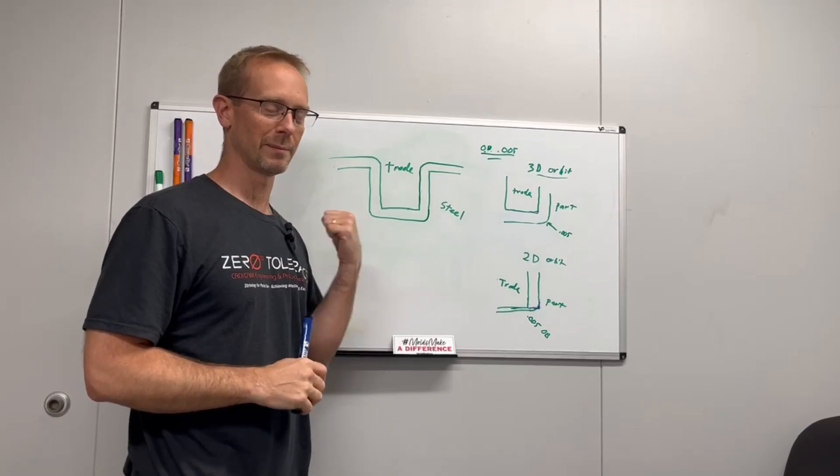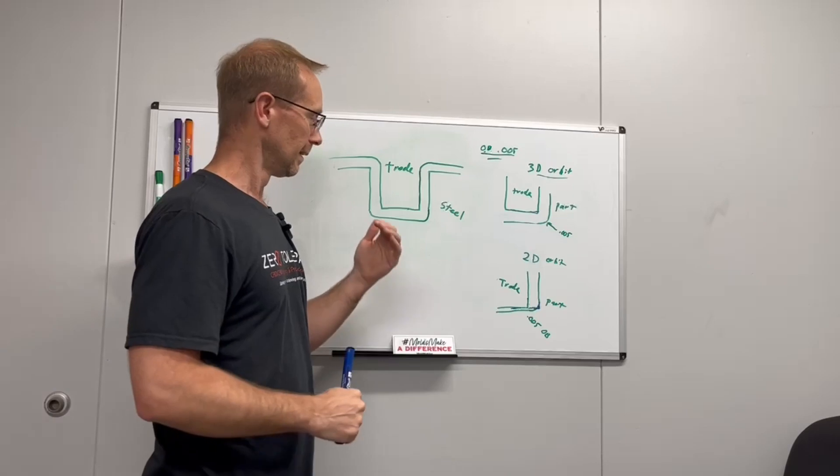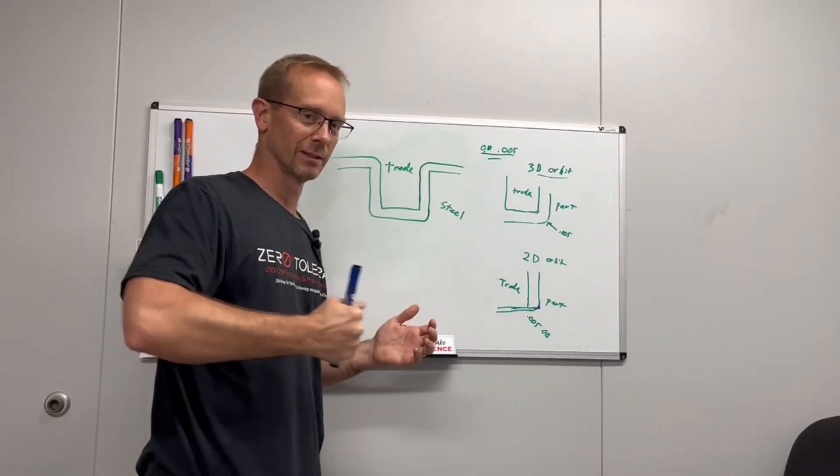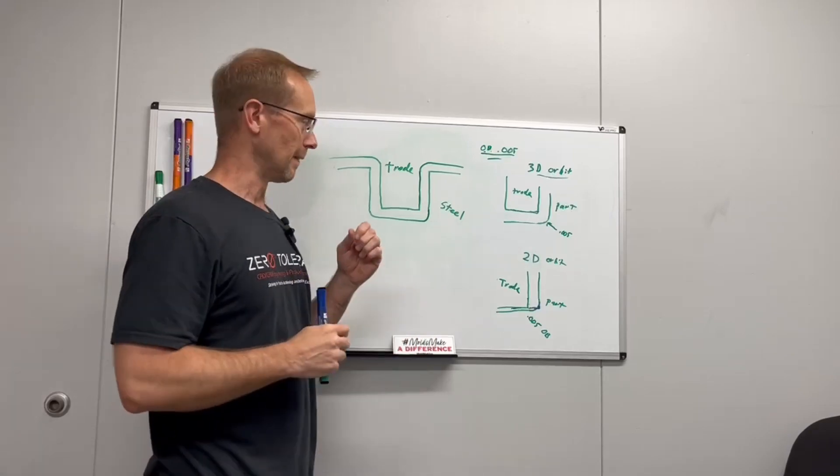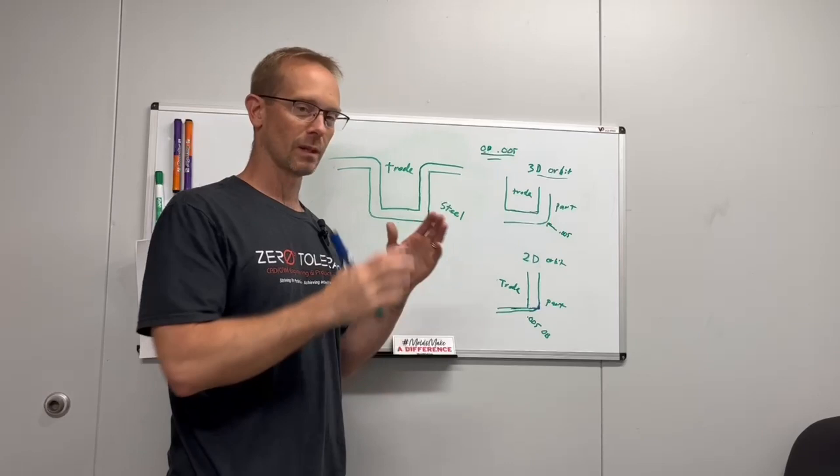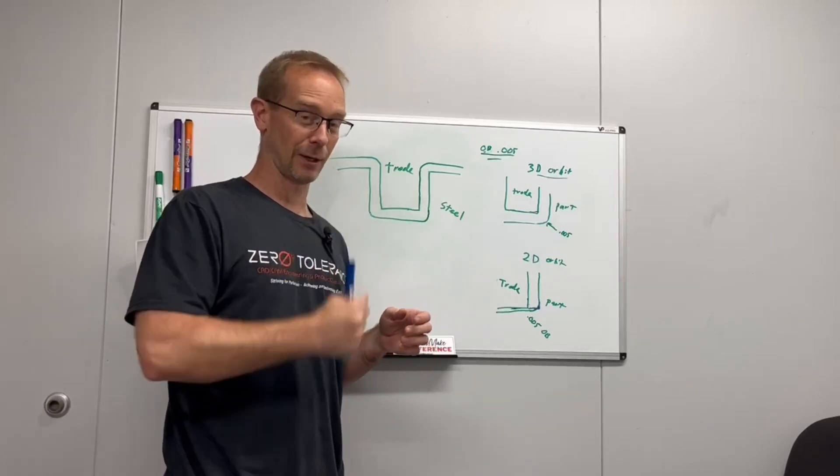This brings me to one of my mistakes when I first started going from plunge EDM to orbiting EDM. The 2D orbiting goes down in 2D all the way to the bottom, and it does an XY circle. And that's the most common orbiting. The 3D does it XY, ZX, and ZY.